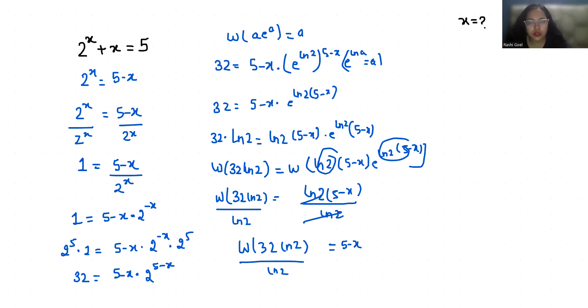So x equals 5 minus W(32 ln 2) divided by ln 2, which is approximately equal to 1.7156.